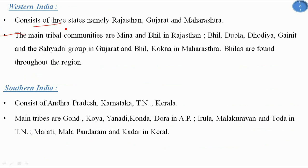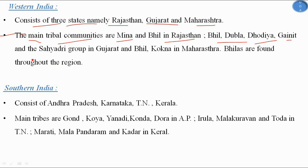Western India consists of three states: Rajasthan, Gujarat, and Maharashtra. The main tribal communities are Meena and Bheel in Rajasthan; Bheel, Dubla, Dodia, Gainit, and the Sayadri group in Gujarat; and Bheel and Kokona in Maharashtra. Bheels are found throughout the region.